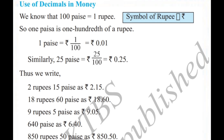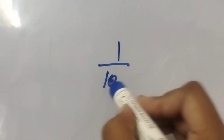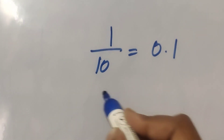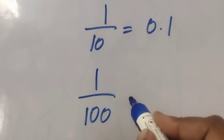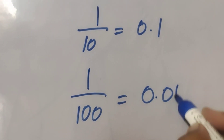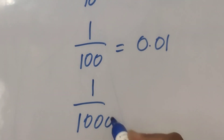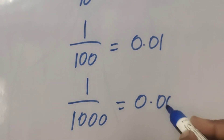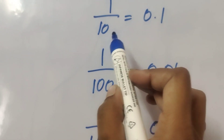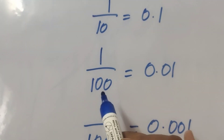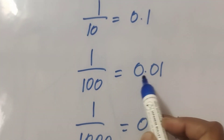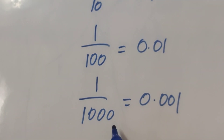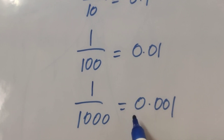So, one hundredth written in decimal form is 0.01. Similarly, 25 paise is written as 0.25. For example, 1 by 10 is written as 0.1, and 1 by 100 is written as 0.01.